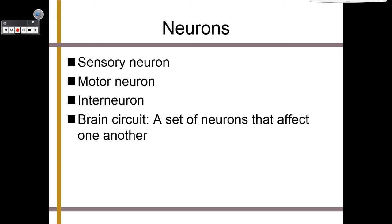A brain circuit is a set of neurons that affect one another. We have a brain circuit that connects a sensory neuron through a series of interneurons all the way to the brain. And we have another brain circuit that goes from the brain through interneurons to a motor neuron going to a muscle. Both of these chains of neurons would be considered brain circuits.